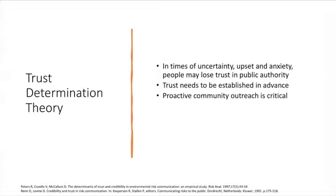Trust is really important, and trust determination theory recognizes that people might lose trust in public authority — that trust may be eroded, particularly when uncertainty is attached to anxiety, fear, and upset. Coming as an unknown spokesperson from an unknown organization means you have to work very hard to establish trust in the middle of a crisis. Trust building needs to occur over longer periods of time, in advance and in anticipation of a crisis, through active practice routes of communication, proactive community outreach, honest communication, coherent and consistent communication. Acknowledging errors goes a long way to building trust, as does accountability for the messages sent.